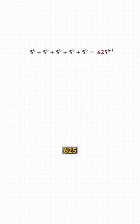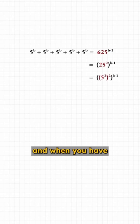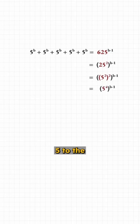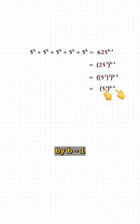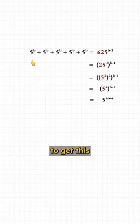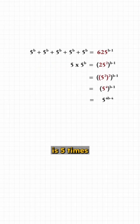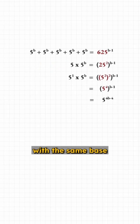625 is 25 squared, and 25 is 5 squared. When you have a power of a power, you can multiply them to get five to the fourth power. Similarly, the exponent can be multiplied by b minus one. Since there are five 'five to the b' powers, the left side is five times five to the b power.